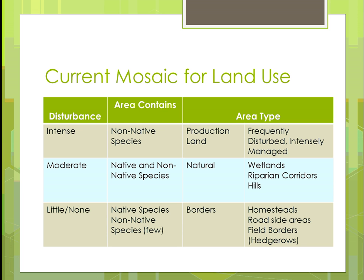We intensely manage production land, and when we go in to harvest the crop, we also disturb it tremendously with all the heavy equipment. Then there's moderate interference, where you have native and non-native species growing — perennials alongside some native plants that help in wetlands, riparian corridors, and hilly areas. That's putting in those types of plants and construction projects that allow you to be more natural while still providing moderate disturbance to create the environment you want. Using native species plants in riparian corridors and wetlands is beneficial because their deeper root systems allow water to soak in better.